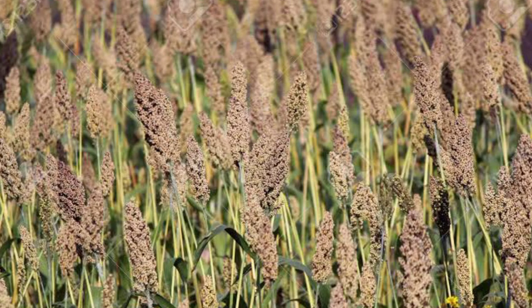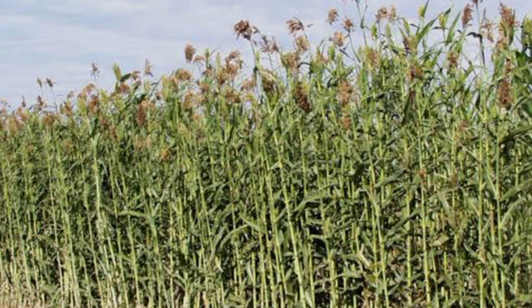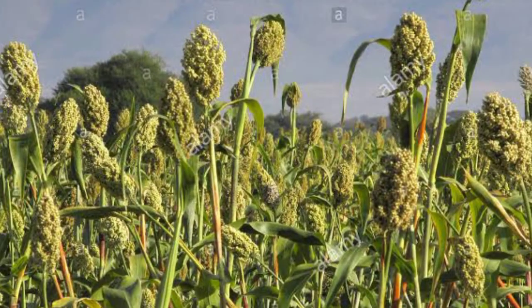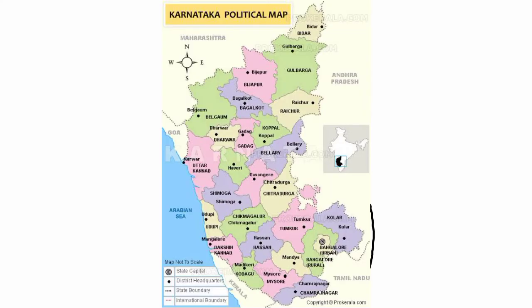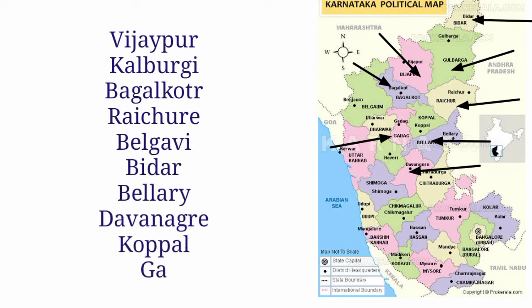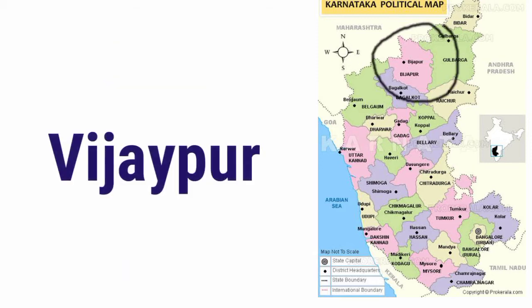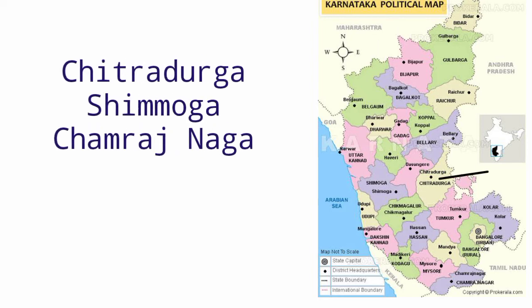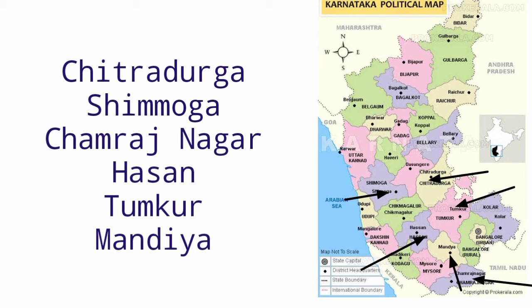Jowar belongs to the grass family and is a tropical crop. It requires moderate rainfall and moderate temperature. Mixed black and red soil and alluvial soil are suitable for jowar. It is a rain-fed crop grown by the broadcasting method and depends on the southwestern monsoon. Major jowar-growing districts include Vijayapura, Kalaburagi, Bagalkote, Raichur, Belagavi, Bidar, Ballari, Davanagere, Koppal, and Gadag. Vijayapura stands first in producing jowar. Chitradurga, Shivamogga, Chamarajanagar, Hassan, Tumkur, and Mandya are also producers of jowar.